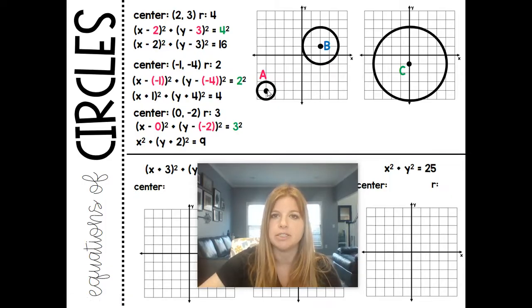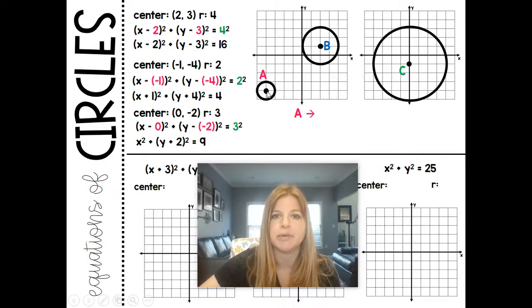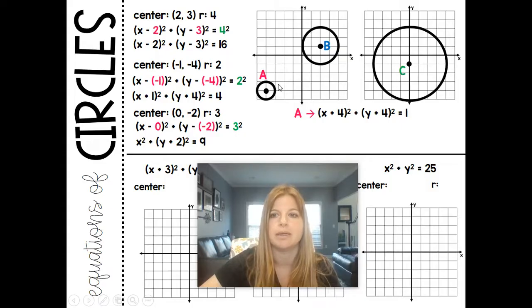So think about that. If the center is at negative 4, negative 4, that would mean that it's then x plus 4, y plus 4. And then the radius. Look at the radius of the circle. It's 1. 1 squared happens to also be 1. And this is what the equation would be: x plus 4 squared, y plus 4 squared equals 1.